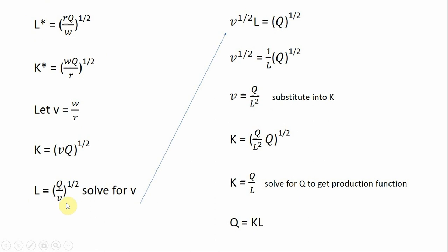The next step is to take our conditional input demand for labor and solve it for V. Multiplying both sides by the square root of V, we get the next expression. Then dividing both sides through by L, we get the following step. To get rid of V raised to the 1-half power, we need to square both sides, so we get V equals Q divided by L, all squared — that is, Q² over L².